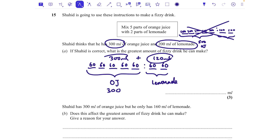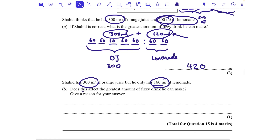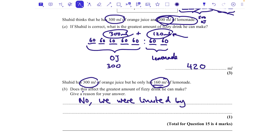Shahid actually has 160 ml of lemonade rather than 200 ml. Does this affect the greatest amount he can make? No — we were already limited by the orange juice, using only 120 ml of lemonade. Even with 160 ml available, we'd still have some lemonade left over. The orange juice was the limiting factor.